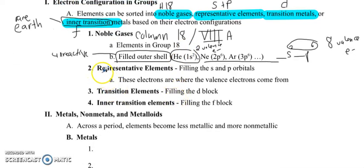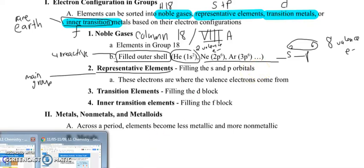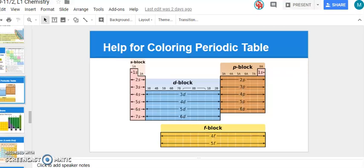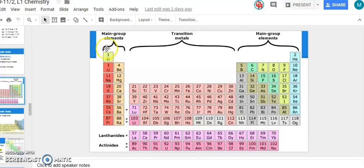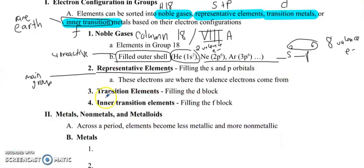Let's talk about the representative elements. Another name for representative is also called the main group. And here we are filling the s and the p orbitals. So this is, if we go back to my picture I had for you, let's see right here. So main group elements, column one, column two, skip the whole d block, column 13, 14, 15, 16, 17, 18. Those are the main group or the representative elements.